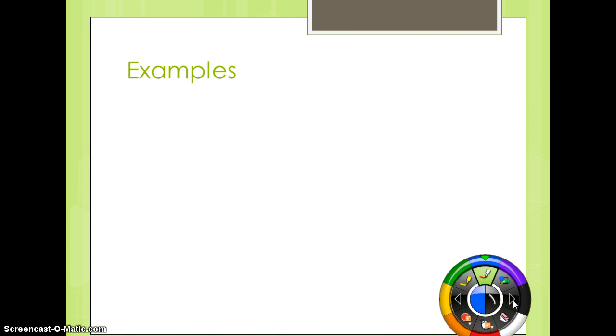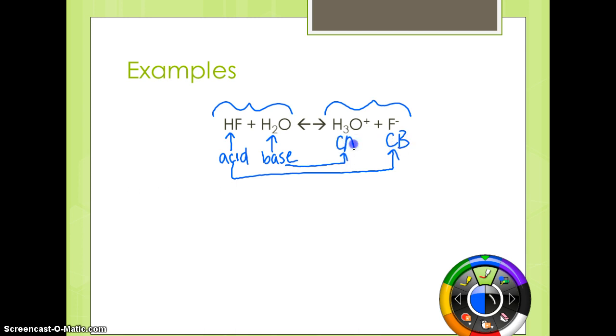So if we look at some examples, we have HF plus H2O reversible yields H3O plus, plus the fluoride ion. So we need to figure out who is donating the proton first. When you compare your reactant side to your product side, who gave away their proton? And that's this guy. And that makes this the acid. So if this is the acid, then water has to be the base. And so this acid becomes this. So this is the conjugate base. The base becomes this. So this is the conjugate acid.